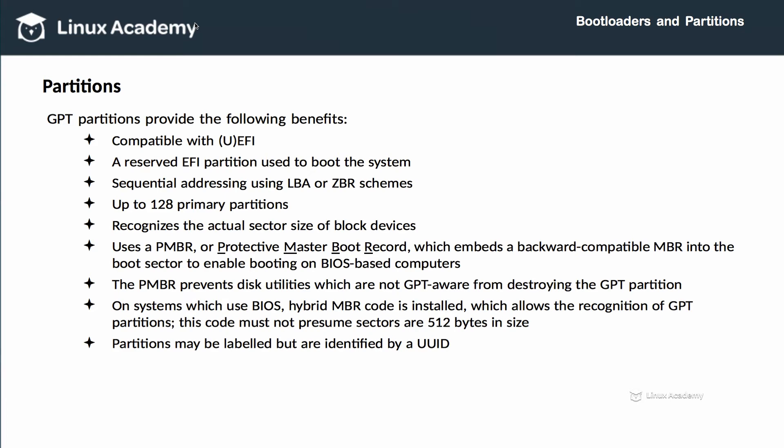On systems which use BIOS, a hybrid MBR code can be installed which allows GPT partitions to be recognized, but this code can't presume that the sector size of the underlying device is 512 bytes. Unlike MBR, where partitions are primarily identified by a single digit, GPT partitions are identified by a UUID, or Universally Unique Identifier.